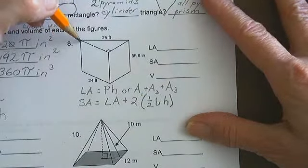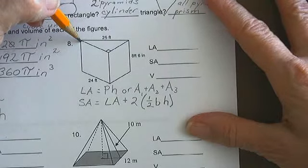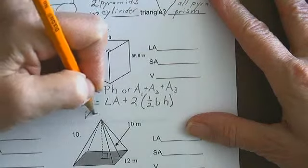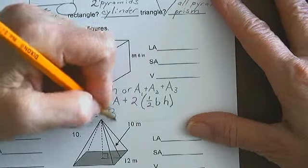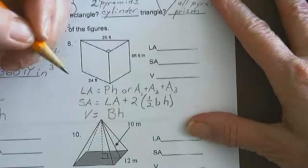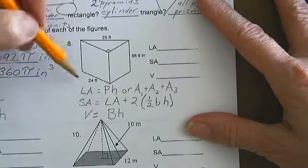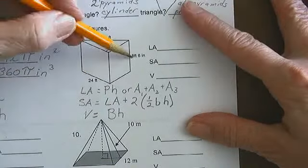Finally, volume is area of the base times the height. Okay, perimeter times the height. Well, now wait.